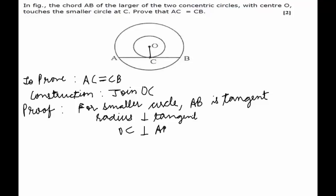Now for the larger circle, AB is behaving as a chord. So using the property that the perpendicular, which will be OC drawn from the center O, bisects the chord, we can say that AC would be equal to CB. And hence proved.